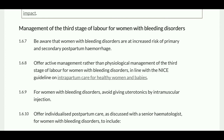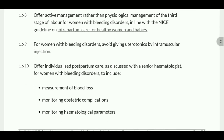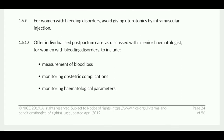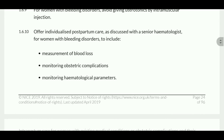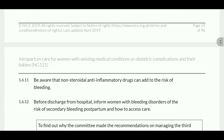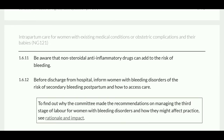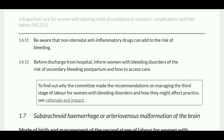Regarding management of the third stage of labor for women with a bleeding disorder: be aware that women with bleeding disorders are at increased risk of primary and secondary postpartum hemorrhage. Offer active management rather than physiological management of the third stage of labor. Avoid giving uterotonic drugs by intramuscular injection. Offer postpartum care as discussed with the senior hematologist, including measurement of blood loss, monitoring of obstetric complications, and monitoring hematological parameters. Be aware that NSAIDs can add to the risk of bleeding. Before discharge, inform the woman of the risk of secondary postpartum bleeding and how to access care.